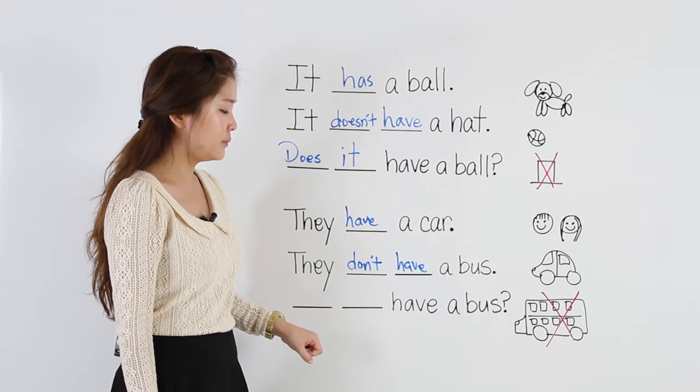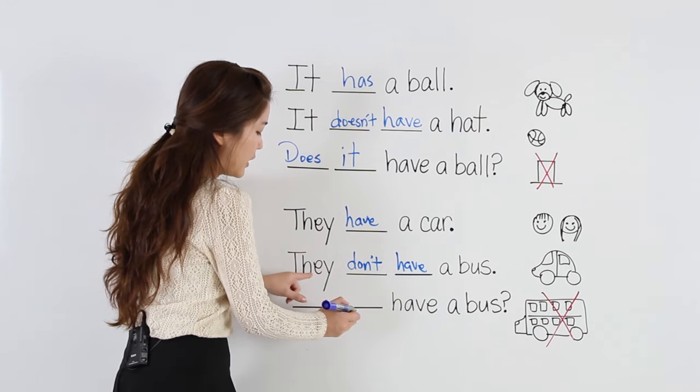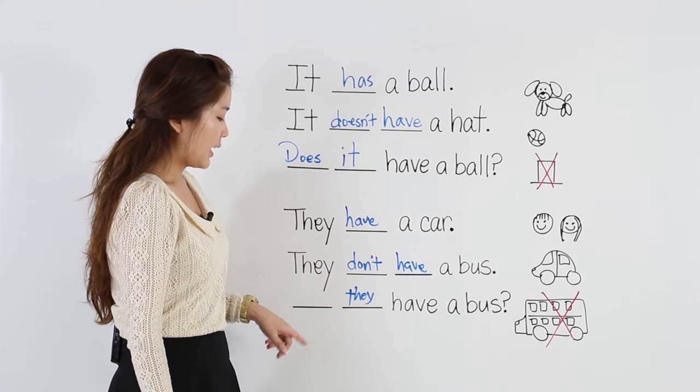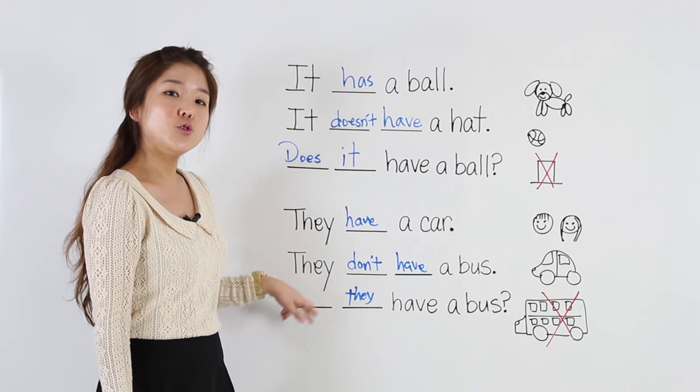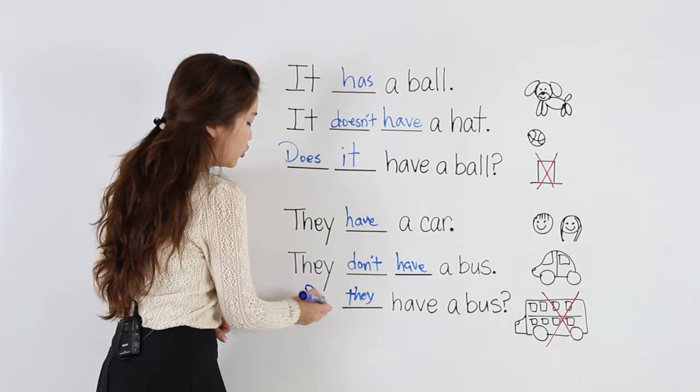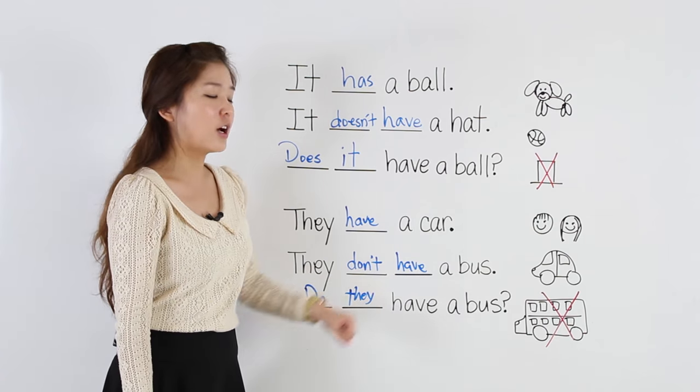Okay, and we have a question. Well, again, we have to put the same pronoun. How about in the front? Do or does? For they, we put do. Do they have a bus?